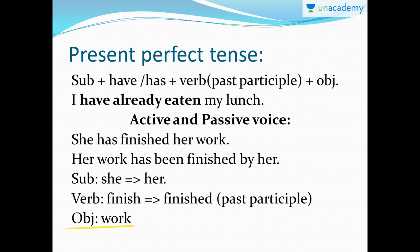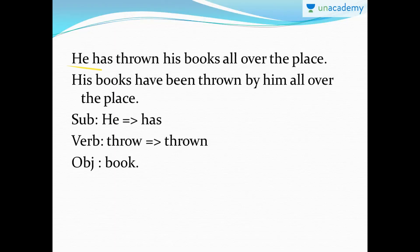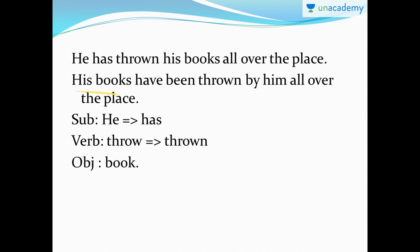Let's move on. Another example: 'He has thrown his books all over the place.' Here 'he' is the subject, and 'books' is the object. The object comes in the beginning: 'his books.' Then 'he' changes to 'him' at the end. Since 'books' is plural, we use 'have' not 'has.' So: 'His books have been thrown by him all over the place.' Notice 'been' is placed between 'have' and 'thrown.'